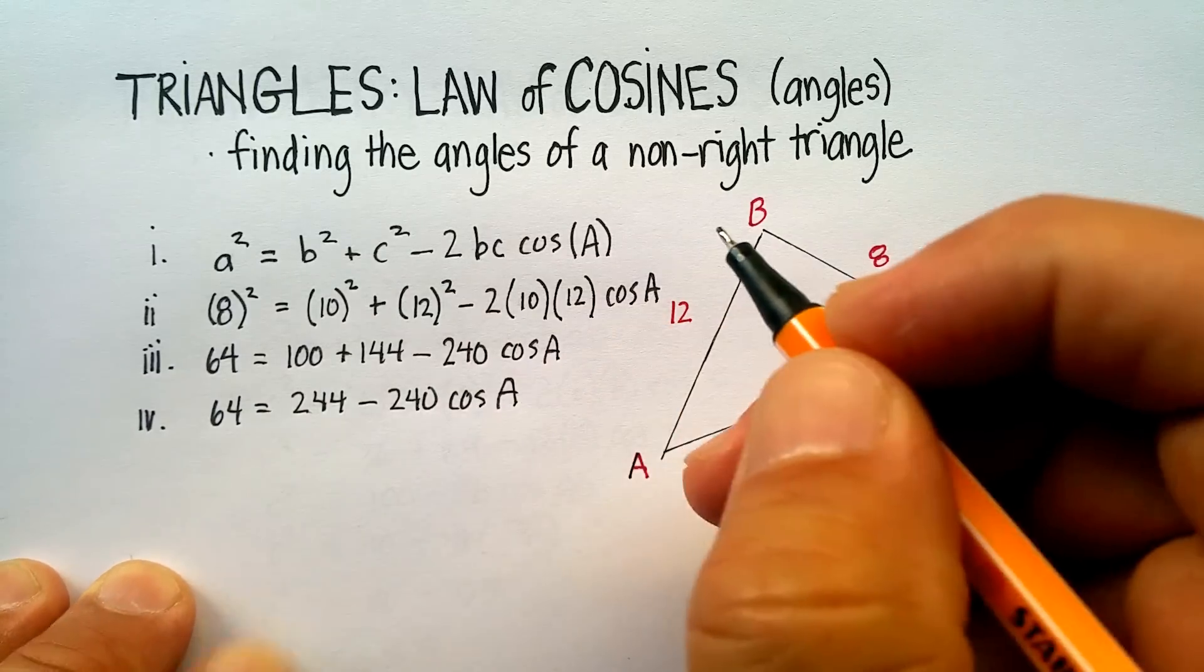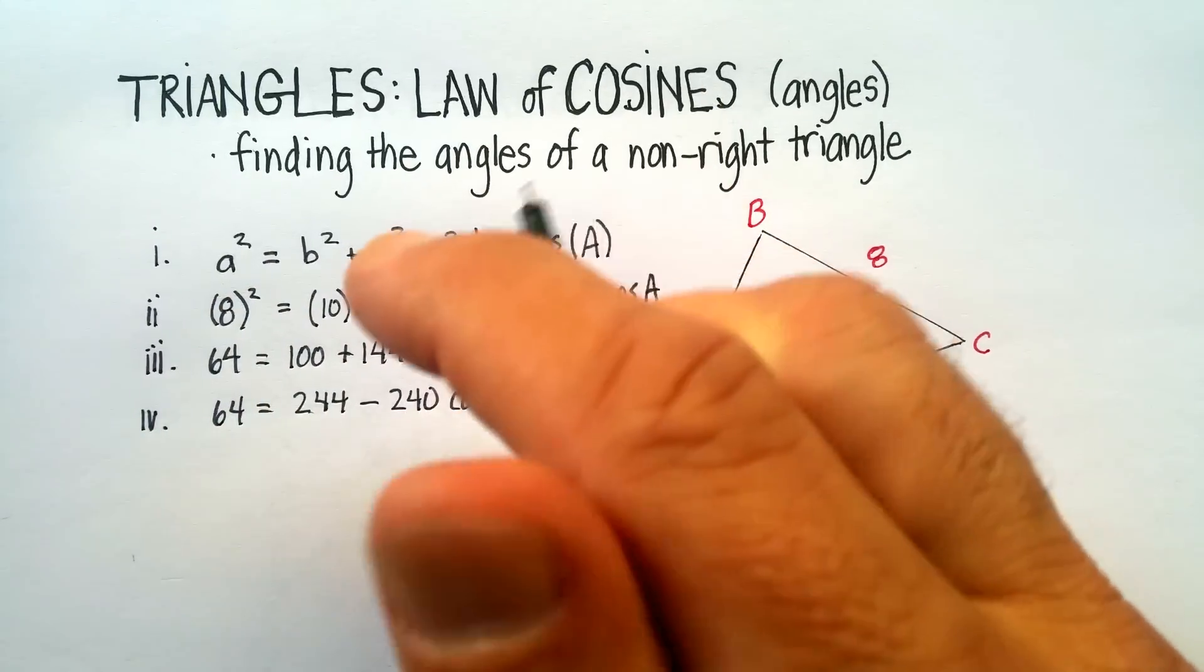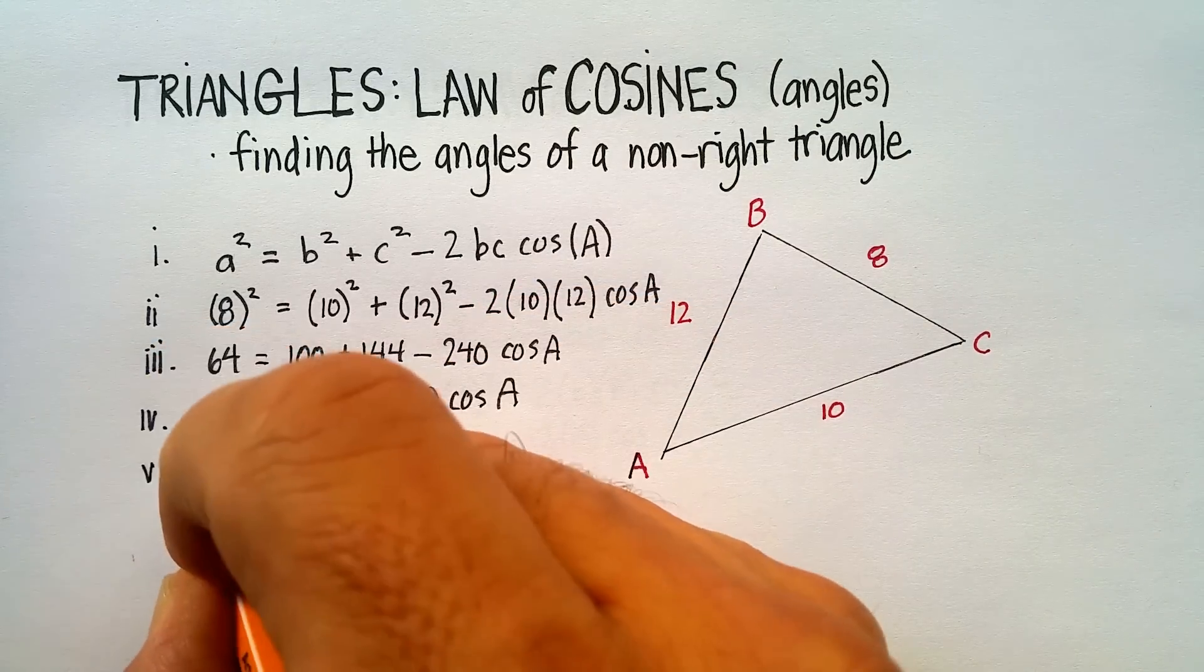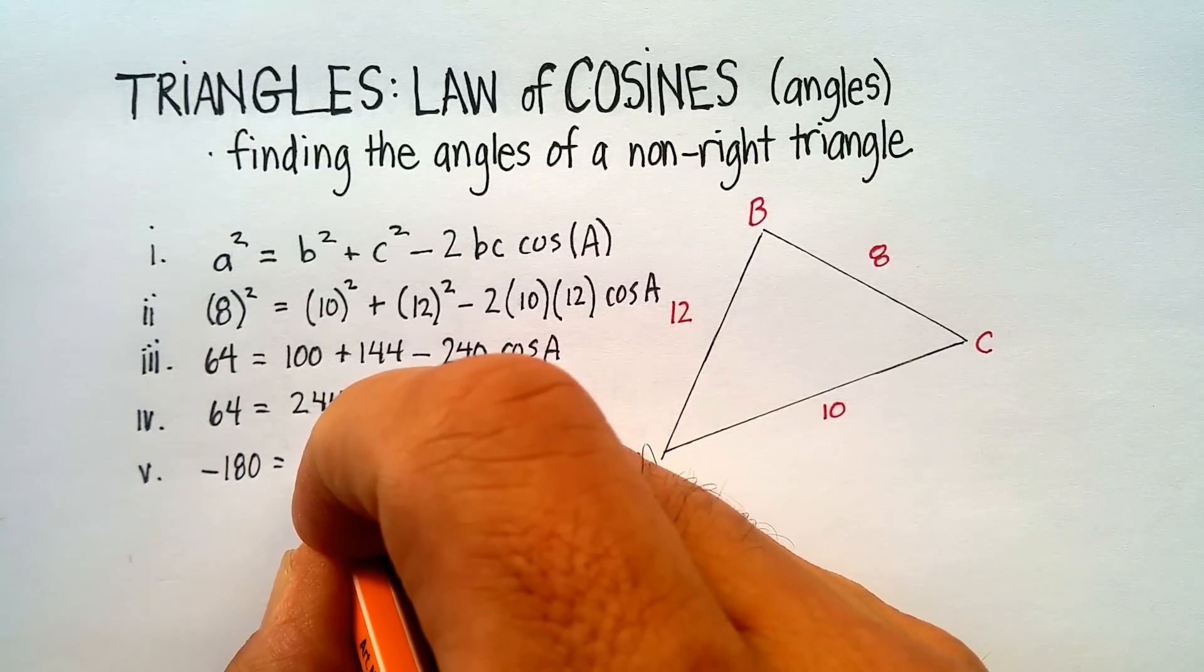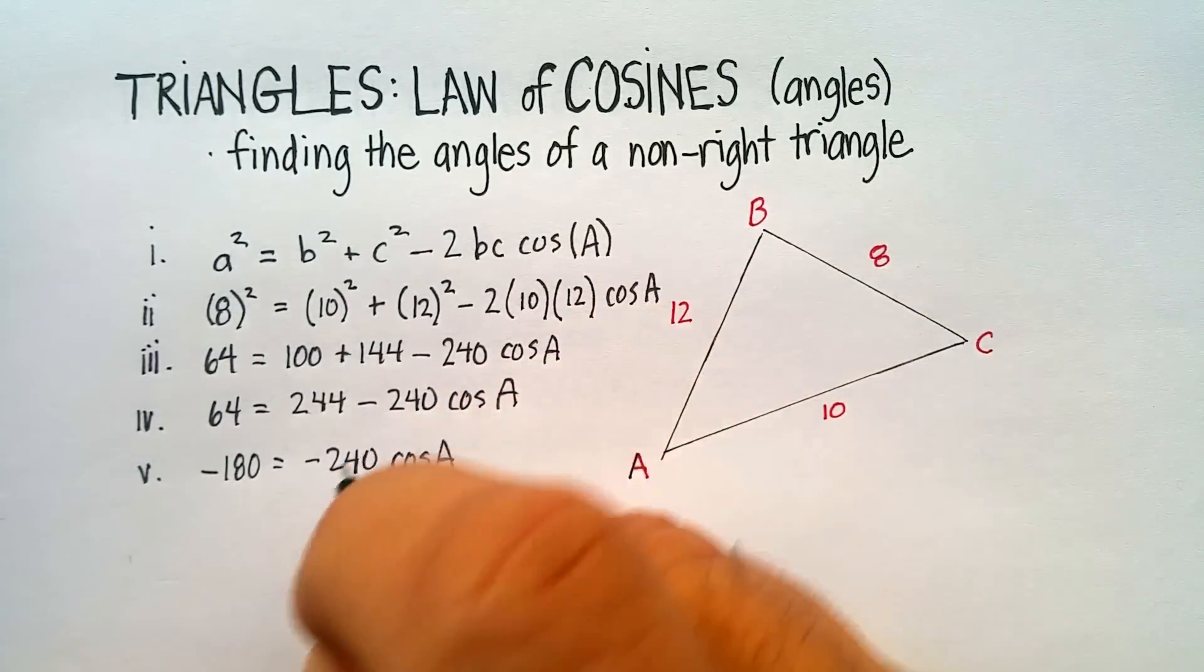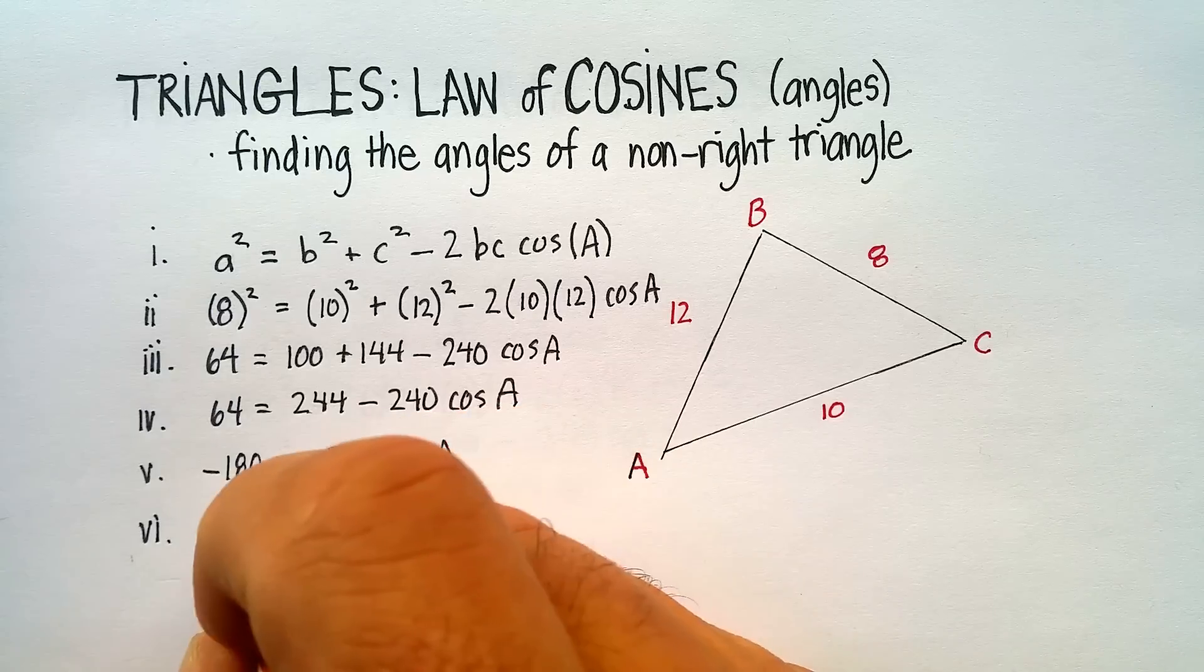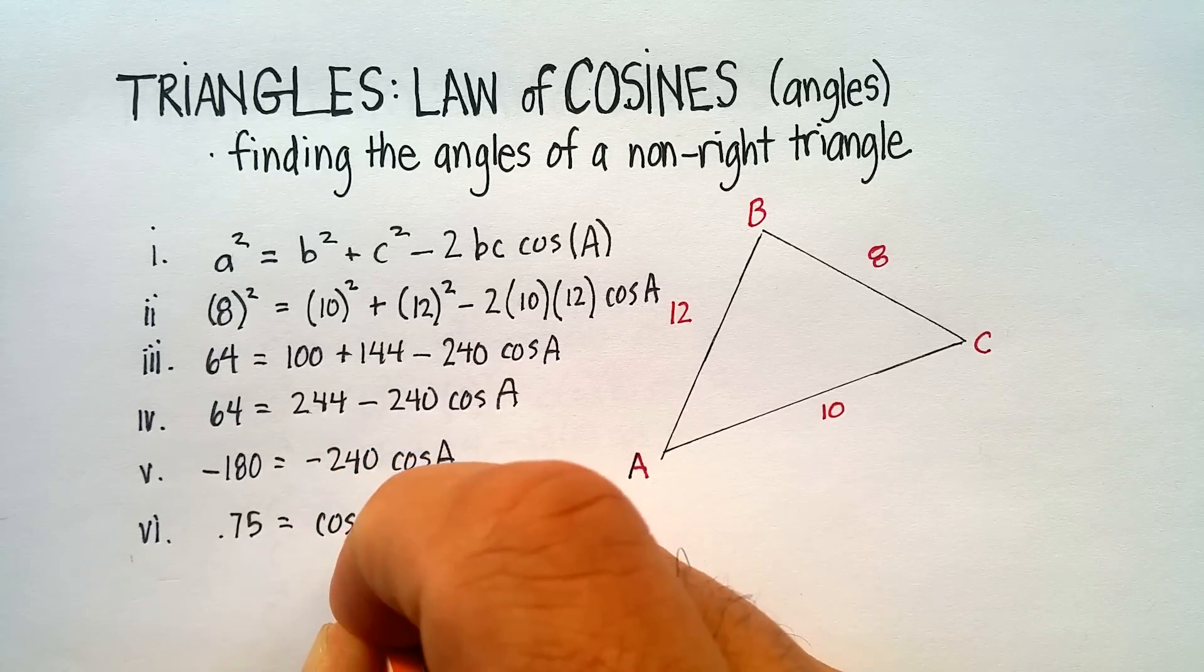We have 64 = 244 - 240 cos A. Remember, use your PEMDAS to make sure you do these correctly, multiplications first. Now let's subtract 244 from 64, and you get -180, so -180 = -240 cos A.